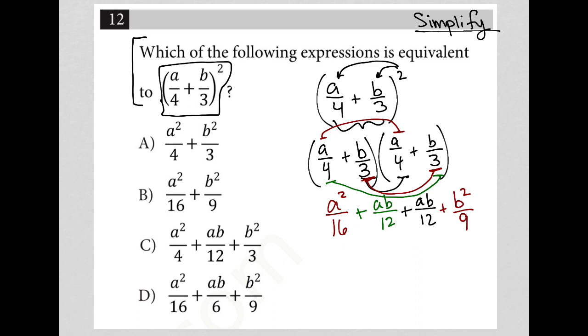So to combine these two together, I'm going to have my middle two terms here will turn into 2ab over 12. And of course, my last term, there's no like term for that. So it stays b squared over nine. My first term remains a squared over 16.